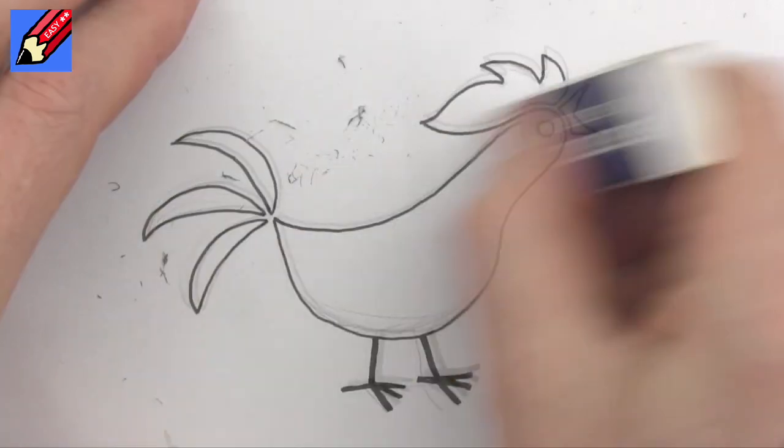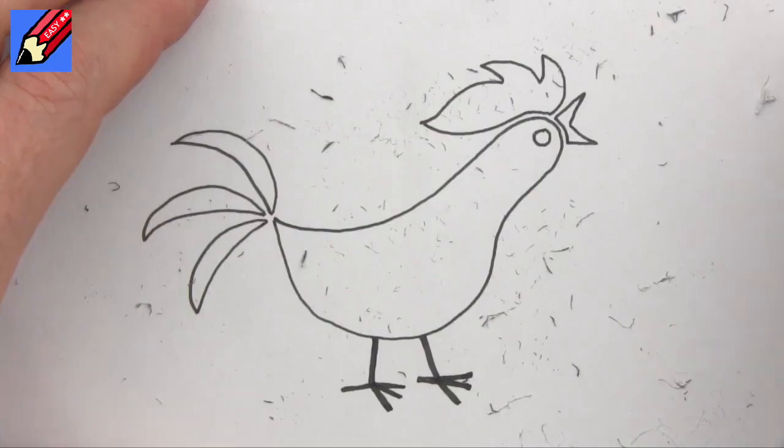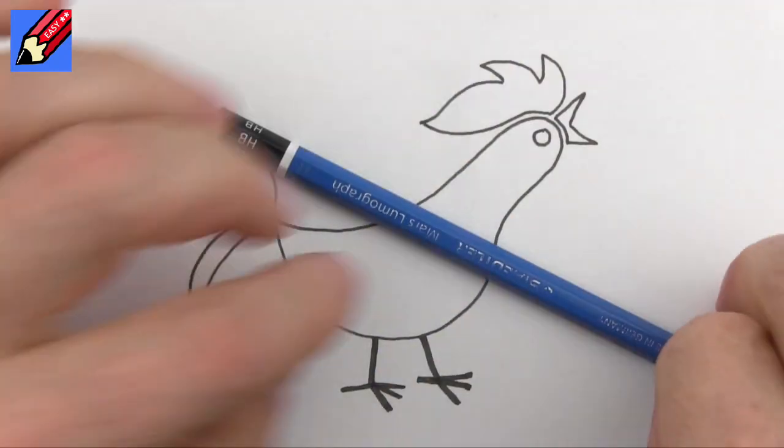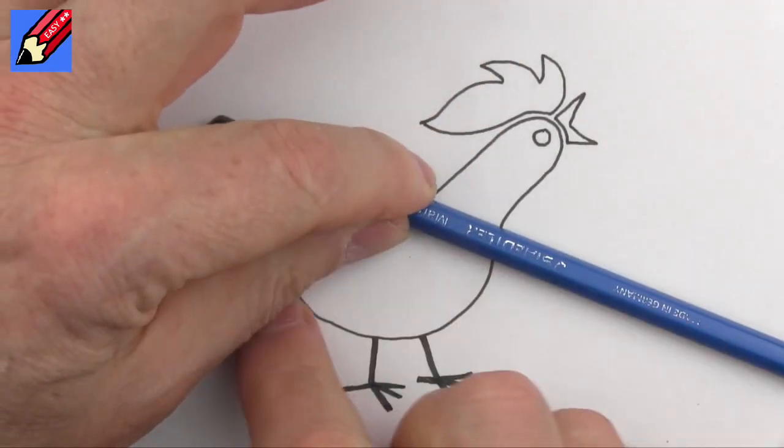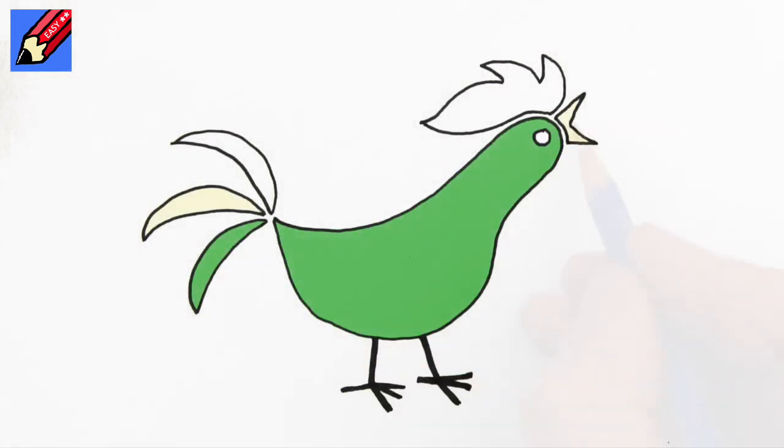When you're sure the ink is dry then you can erase all those pencil lines. And in the old days they used to make the body brown, so we'll have green in the body and the bottom tail feather, and we'll have yellow in the beak and the middle tail feather, and we'll have red in the comb and in the top tail feather. And that's just so simple, beautiful and elegant. And that is how to draw the Corn Flakes chicken real easy.